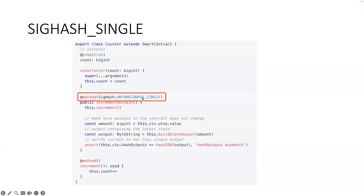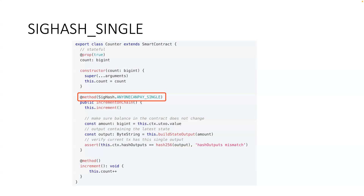That's why ANYONE_CAN_PAY comes into play — you need additional inputs to cover the transaction fee. You're not allowed to cover the fee from the contract balance, so the balance stays the same and you have to have additional inputs. That's why it has to be ANYONE_CAN_PAY: whoever wants to call this contract can add their own inputs — it can be one input or a thousand, as long as there's at least one additional input.